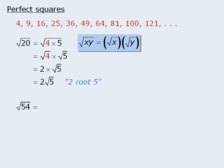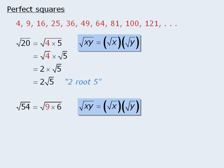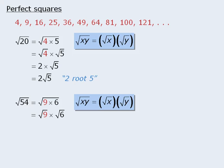Let's try another one. Our goal here is to take 54 and rewrite it as something times something else, where one of those somethings is a perfect square. We can rewrite 54 as 9 times 6, where 9 is a perfect square. From here we apply the property to rewrite the root as the square root of 9 times the square root of 6. The square root of 9 is 3, and the square root of 6 has no integer value, so we leave it as is. So the square root of 54 is equal to 3 times the square root of 6, or simply 3 root 6.